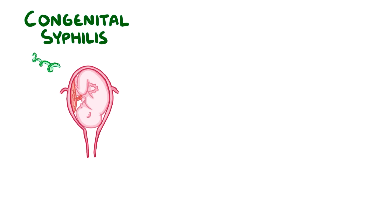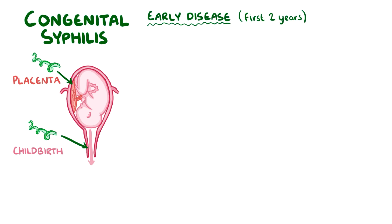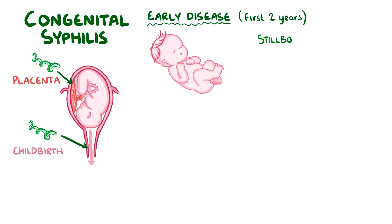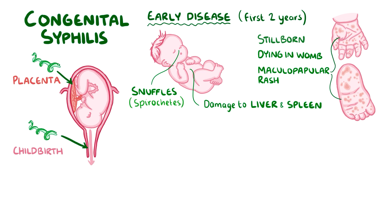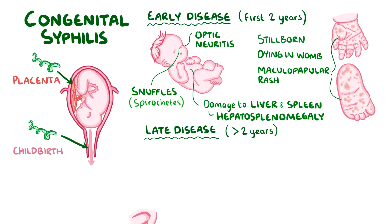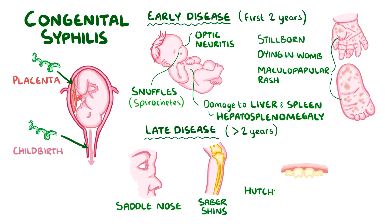In congenital syphilis, the spirochetes can infect the baby either via the placenta or during childbirth in the birth canal. In early disease, which is in the first two years, the result can range from a baby being stillborn or dying within the womb, to having classic features like a maculopapular rash of the palms and soles of the feet, and snuffles, which is when the nose is blocked by increased secretions containing spirochetes. Babies may also have organ damage to the liver and spleen, causing hepatosplenomegaly, and damage to the eyes such as optic neuritis. In late disease, after a child is two years old, classic features include a saddle nose (bony destruction of the nose), sabre shins (when the tibia gets bent), Hutchinson teeth (when the teeth develop little notches), and hearing loss.